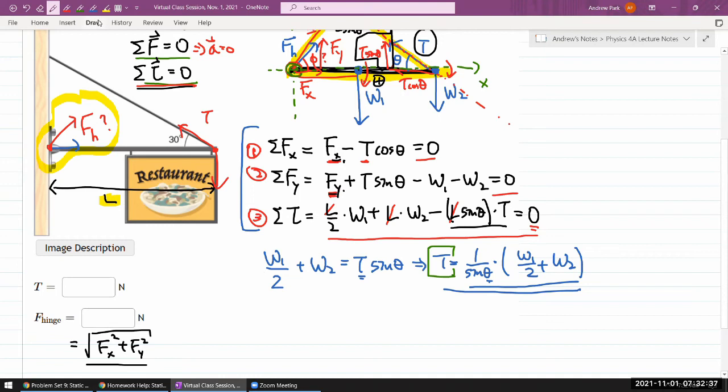The X component of hinge force is quite simple, T cosine theta. I can plug in numbers here for everyone here, so I'll get a numerical value for F of X. And solving for Y component of hinge force, the Y component is moving everything over. It'll be W1 plus W2 minus T sine theta. And I can plug in numbers to everything here. Let me plug in the numbers.